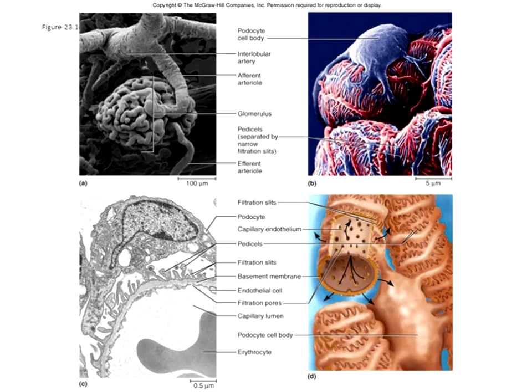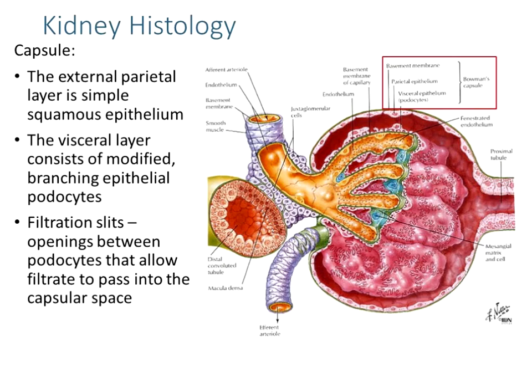Additional images show what the podocyte and glomerular capillary look like, and how the gaps between the podocyte pedicels — even though larger than normal capillaries — still provide protection against losing red blood cells, white blood cells, and platelets from the filtration process.